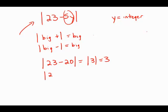If I plug in 25, 23 minus 25, that's negative 2. Absolute value of negative 2 is positive 2.